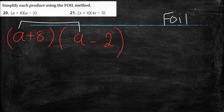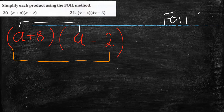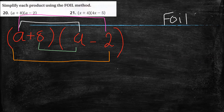O means outside. Who are the outside terms — sitting farthest from each other? That is a and negative 2. I means inner — who are sitting inside, close to each other? That is 8 and a. And L, the last — 8 and negative 2.